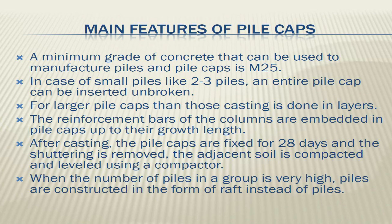Main features of pile caps: a minimum grade of concrete that can be used to manufacture piles and pile caps is M25. In the case of small piles — 2 to 3 piles — an entire pile cap can be cast unbroken. For larger pile caps, casting is done in layers. The reinforcement bars of the columns are embedded in pile caps up to their full anchorage length. After casting, the pile caps are cured for 28 days and the shuttering is removed. The adjacent soil is then compacted and leveled using a compactor. When the number of piles in a group is very high, piles are constructed in the form of a raft instead.